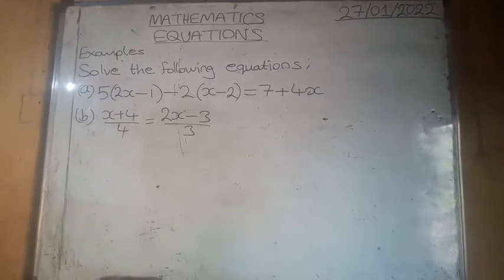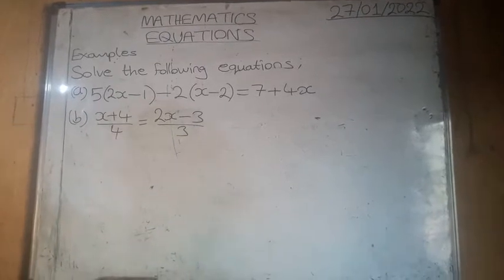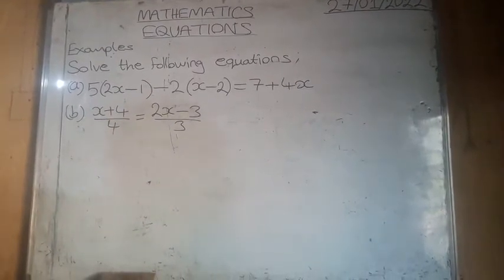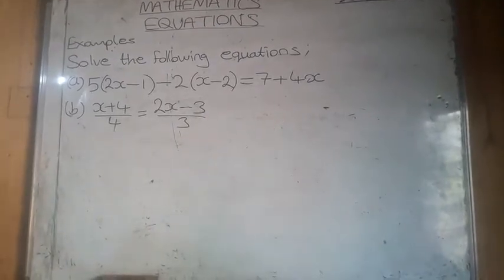Solve the following equations. Part A: 5(2x - 1) - 2(x - 2) = 7 + 4x.